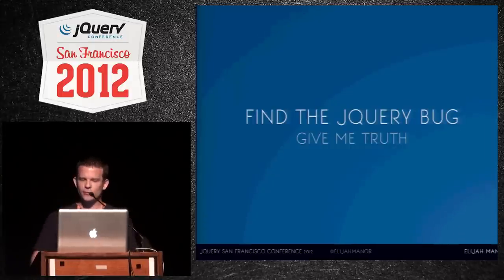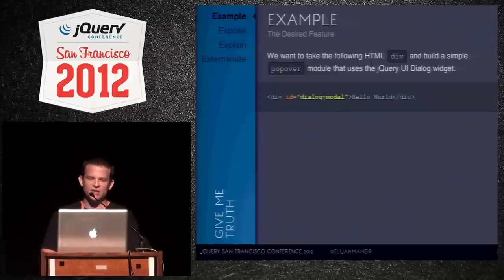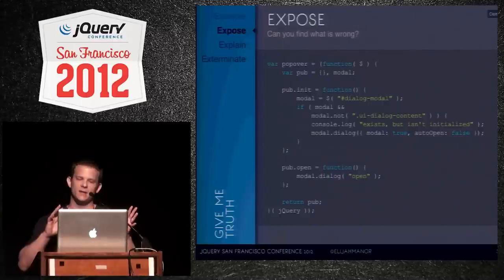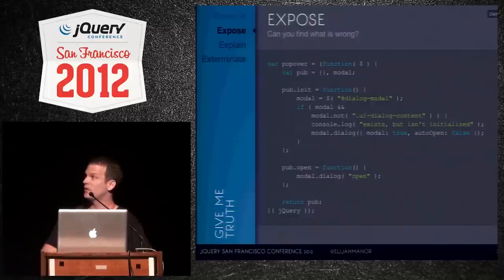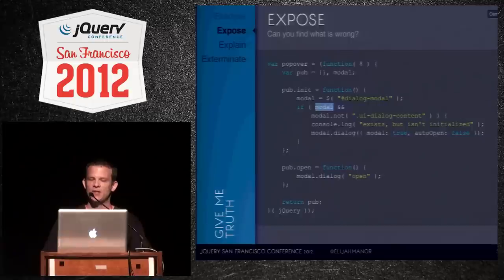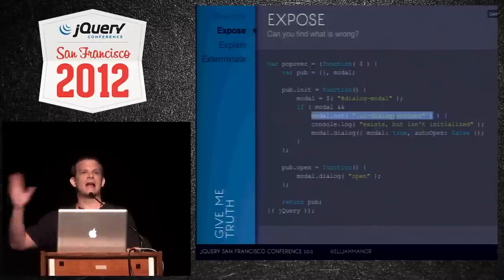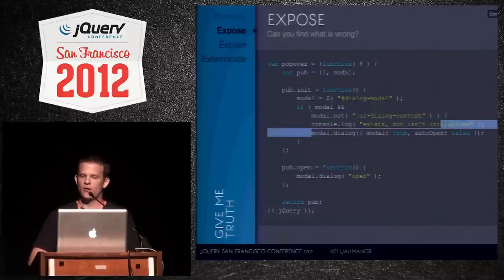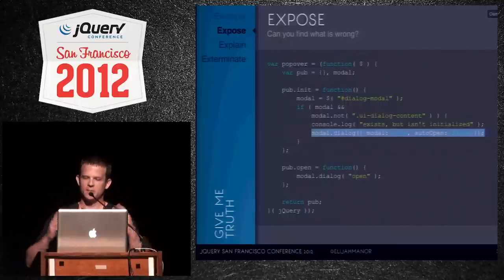The next one I call 'give me truth.' We're building a small module using jQuery UI dialog with an init and an open method. The idea is you can call init as many times as you want, but only the very first time — when it's not initialized — will it actually initialize itself. The developer grabbed an instance of a div, checked if it existed in the DOM, and used the not method to check if a class had been added by jQuery UI.